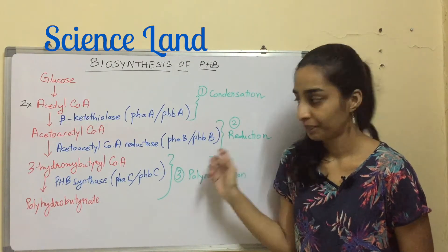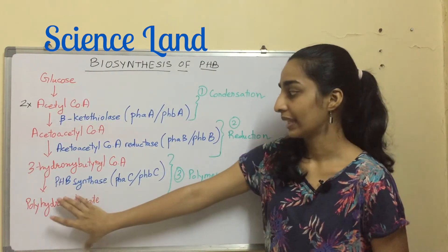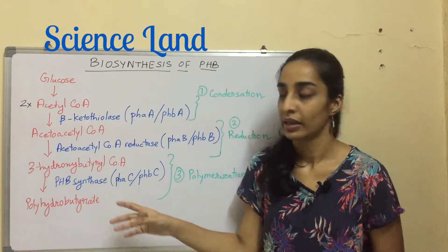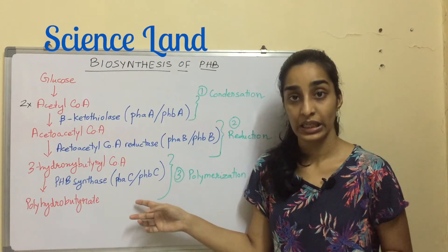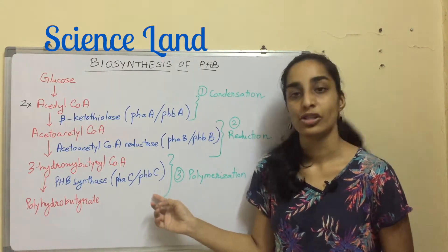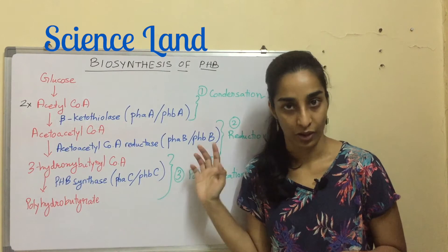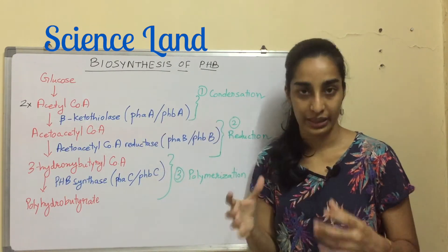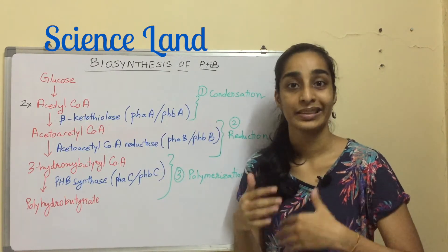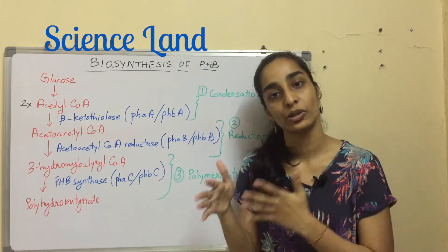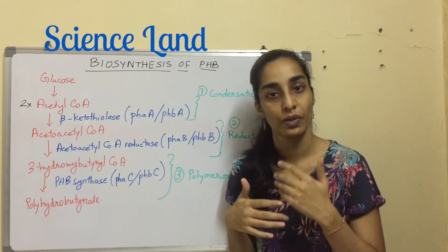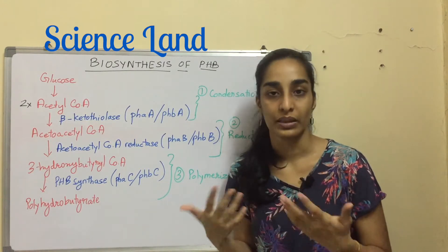The third enzyme is PHB synthase, also known as PhaC or PhbC. With these three enzymes clear, we can now study the actual cycle — the actual steps of producing the PHB molecule.